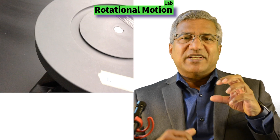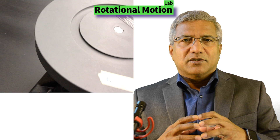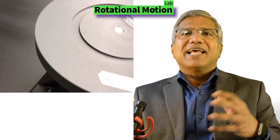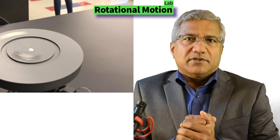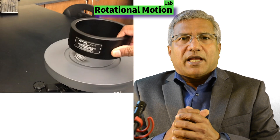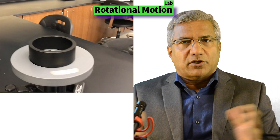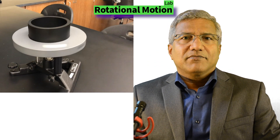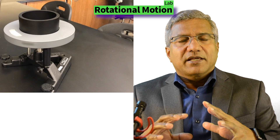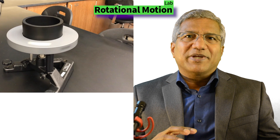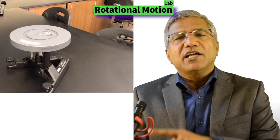Here we have a disk that is rotating, and as the disk is rotating, you take a ring and place it on top of the rotating disk — so it's like a collision. We're going to find the new angular velocity. Since there are no external torques acting, the initial angular momentum of the disk must be equal to their combined angular momentum.